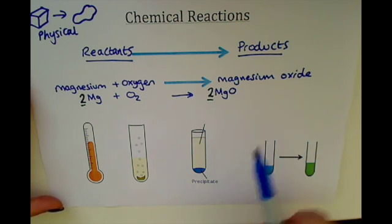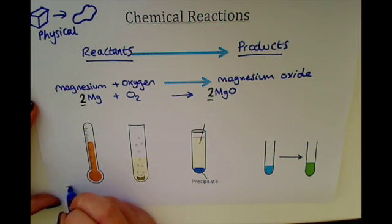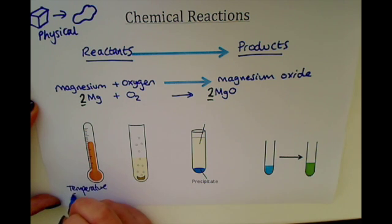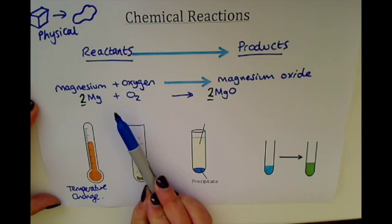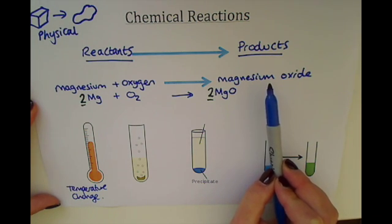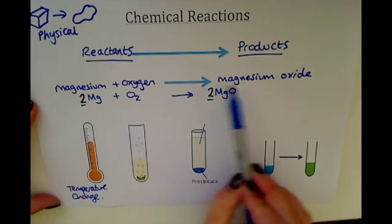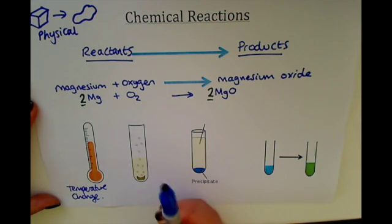There are several ways we can tell that a chemical reaction has taken place. Firstly, there might be a temperature change — the temperature of the reactants may be different to the temperature of the products. That could be an increase in temperature or a decrease in temperature.